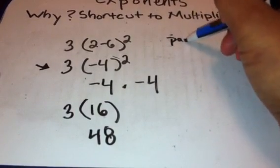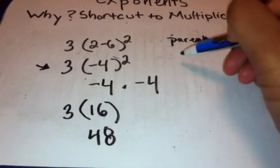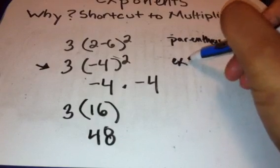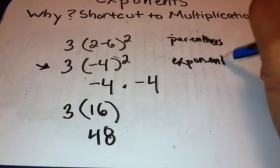At first we did the parenthesis, and then we did exponents. By doing our exponent, we multiplied negative 4 times negative 4.